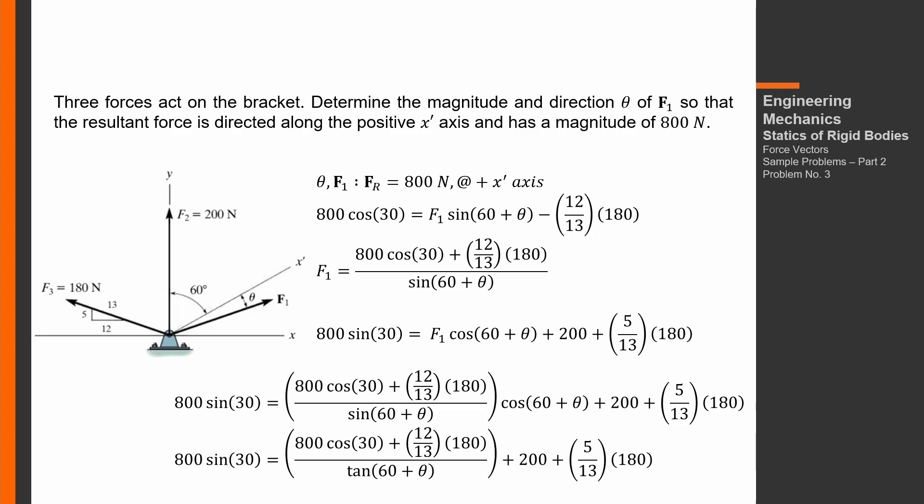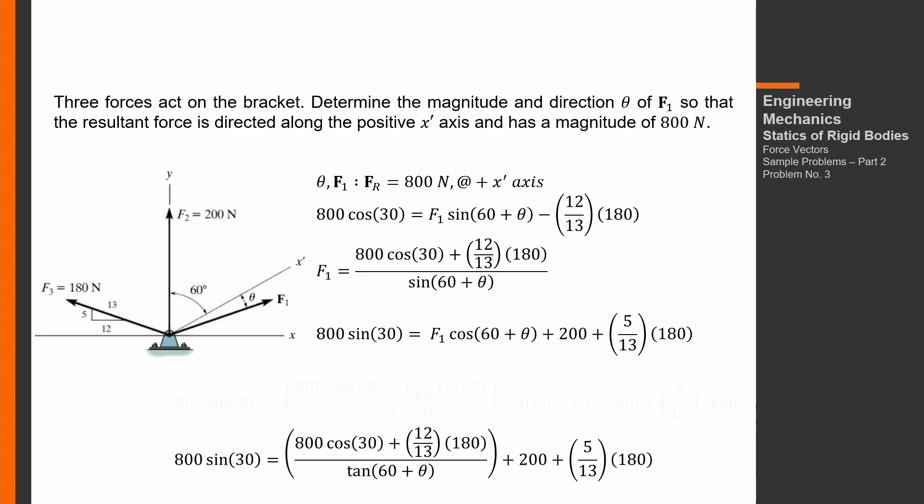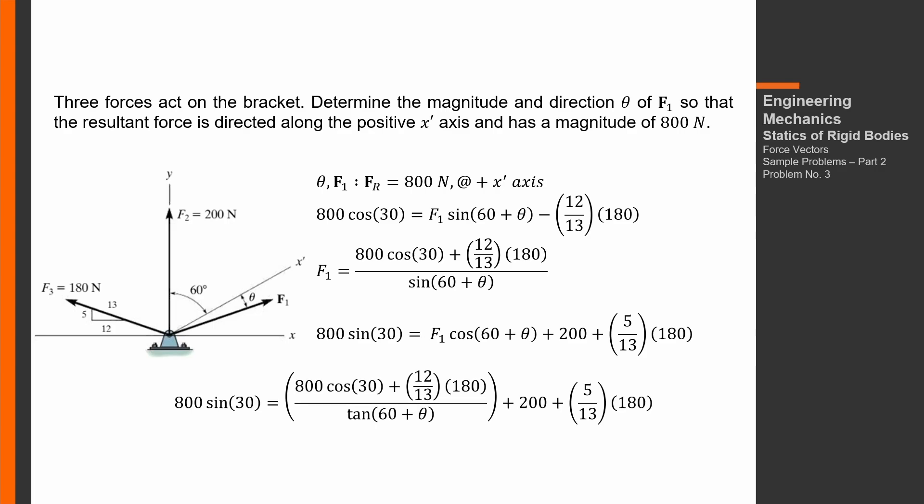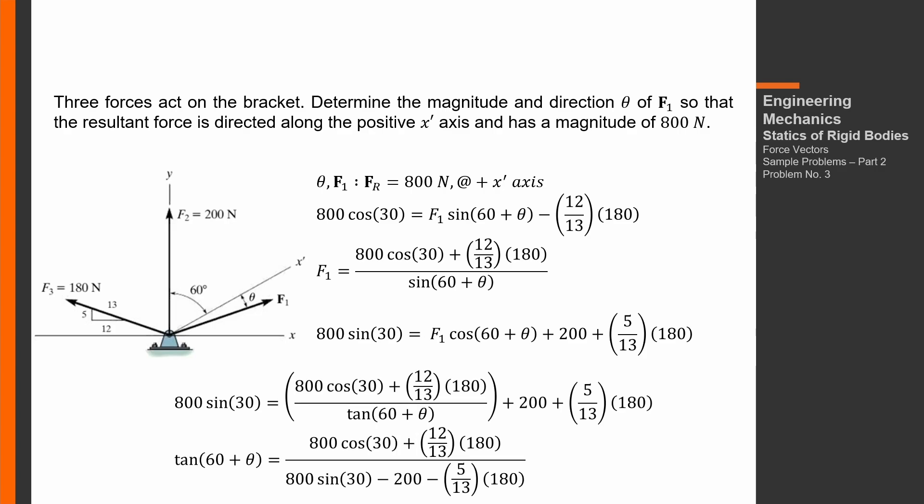We substitute F1 into the second equation. We notice cosine over sine equals cotangent, or 1 over tangent. So we simplify: subtract 200 and (5/13)(180) from both sides, then multiply both sides by tangent(60 + theta), then divide both sides by the constant term — which is 800 sine 30 minus 200 minus (5/13)(180).